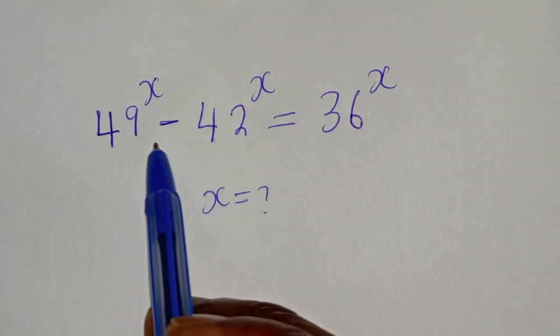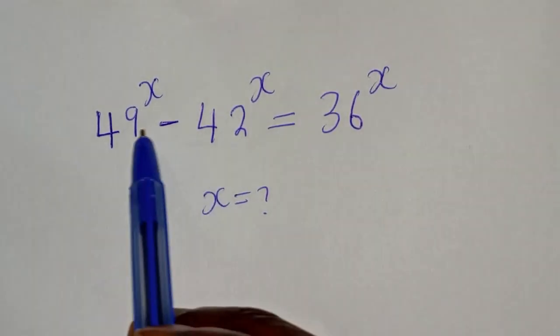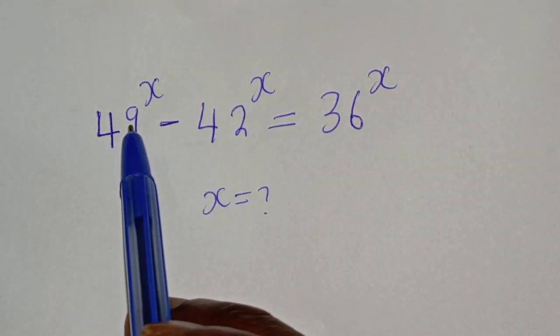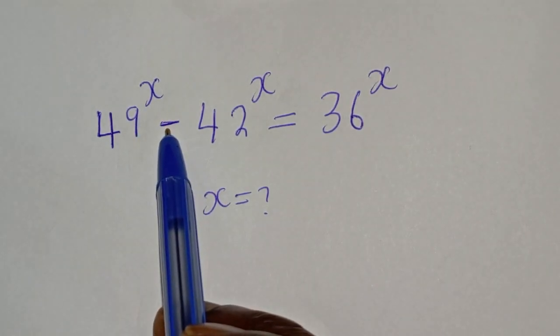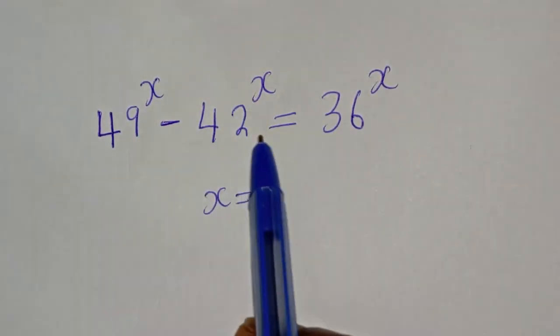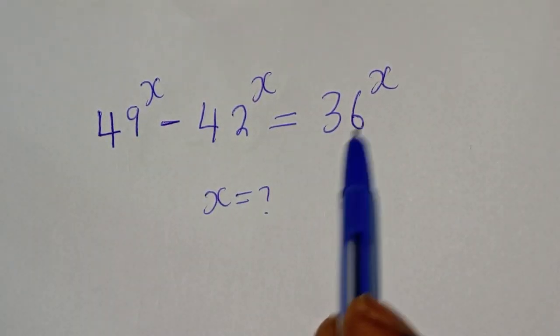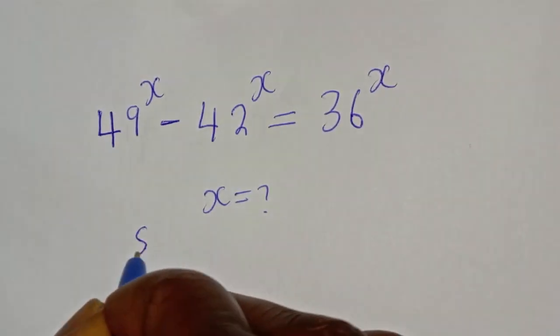Hello, how to solve for s from this given math problem: 49 raised to power x minus 42 raised to power x is equal to 36 raised to power x. Solution.